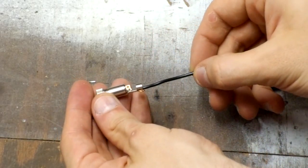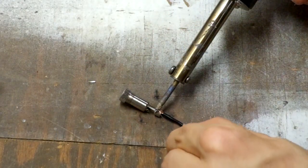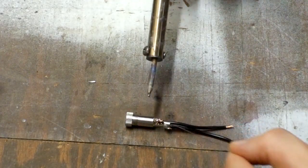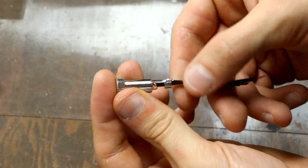First, let's solder on the ground wire. Then we can solder the signal. That's what it should look like when you're done.